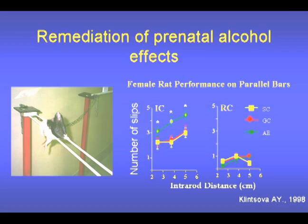Consistent with this behavioral change, complex motor training increases the number of synapses per cerebellar Purkinje cell in both ethanol-treated and control subjects, a finding that indicates that the brain is still plastic and amenable to behavioral interventions even after the alcohol insult is complete. These data provide evidence that behavioral interventions may successfully reduce the severity of fetal alcohol effects.